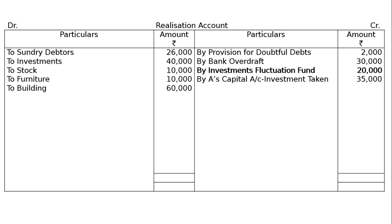Next, B's capital account — investment taken 35,000. As per the question, A took over investments at an agreed valuation of 35,000. This is recorded as by A's capital account, investment taken 35,000, on the debit side of the realization account. In the capital account, it will be to realization account.